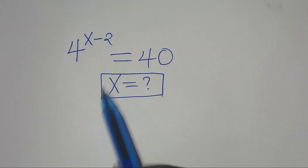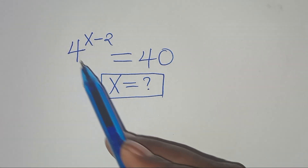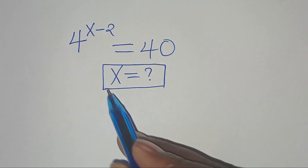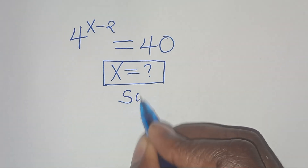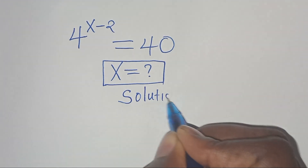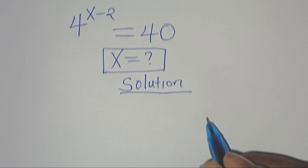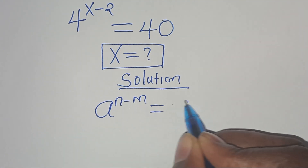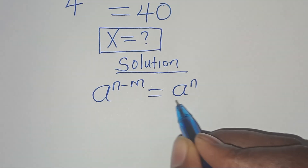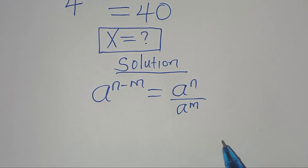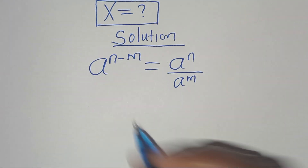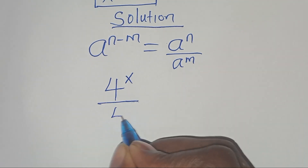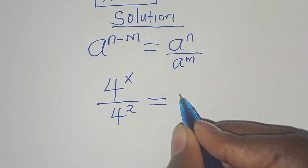Hello everyone, you're welcome to solve this exponential equation: 4 to the power of x minus 2 equals 40. What is the value of x? This exponential equation is of the form a^(n-m), which we can express as a^n divided by a^m. Applying this exponent property, we have 4^x divided by 4^2, equal to 40.